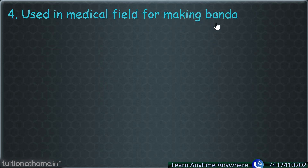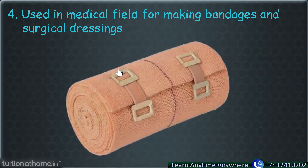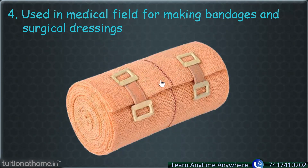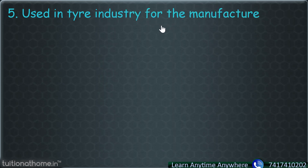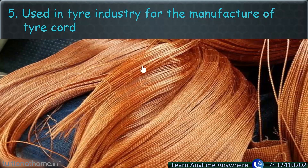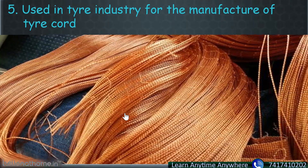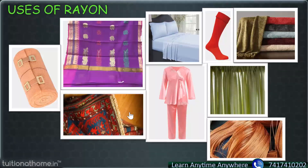Rayon is also used in making bandages and surgical dressings — these bandages also have some part of rayon in them. Next, it is used in the tire industry for manufacturing tire cord. These tire cords give strength to the tire and are made with the help of rayon. So overall, there are many uses of rayon.